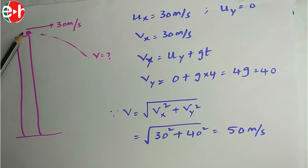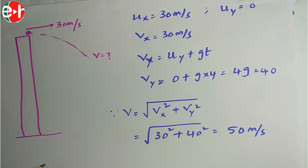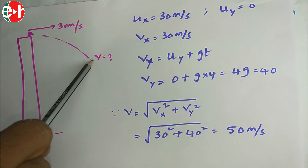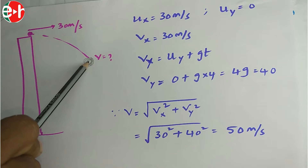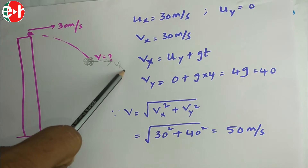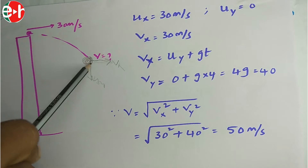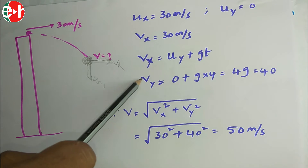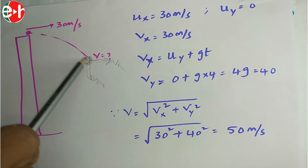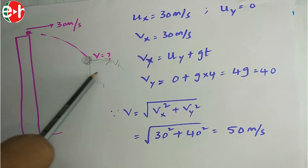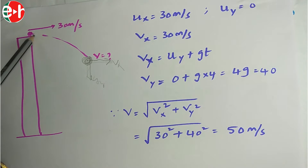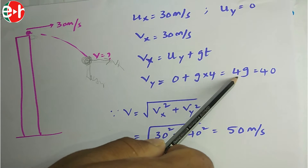A body is thrown horizontally from the top of a tower with a speed of 30 m/s. After 4 seconds it has two velocity components: Vx along the x-axis remains constant at 30 m/s. Vy along the y-axis increases due to gravity: Vy = Uy + g·t = 0 + g×4 = 4g. Taking g = 10 m/s², Vy = 40 m/s.